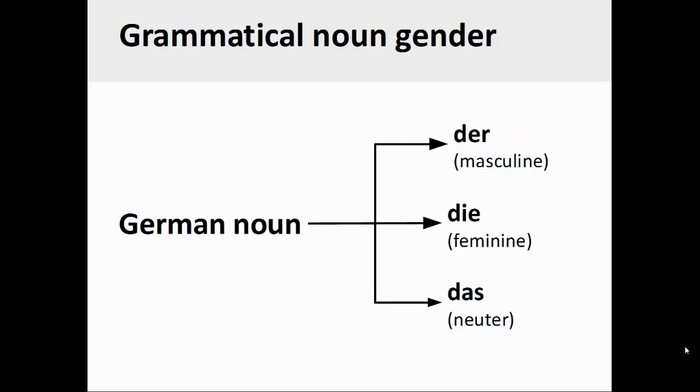The grammatical gender of a German noun determines its definite article. Masculine nouns have the definite article der. Feminine nouns have the definite article die. And neuter nouns have the definite article das.